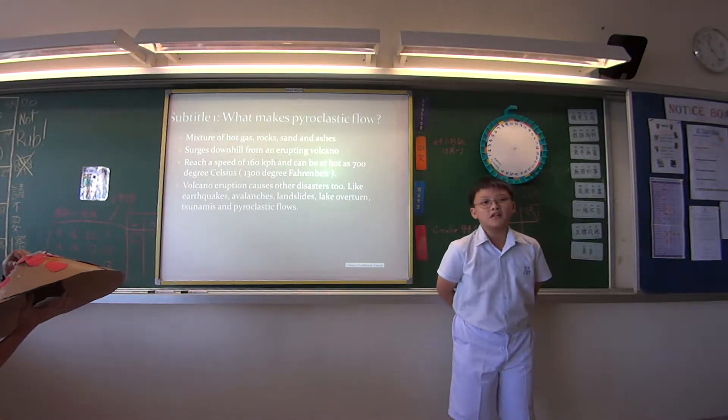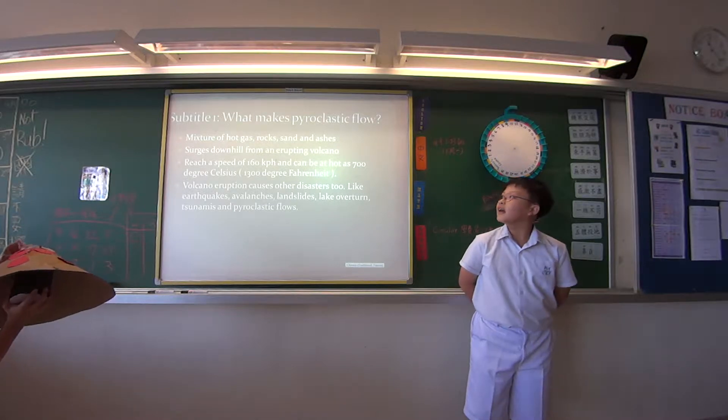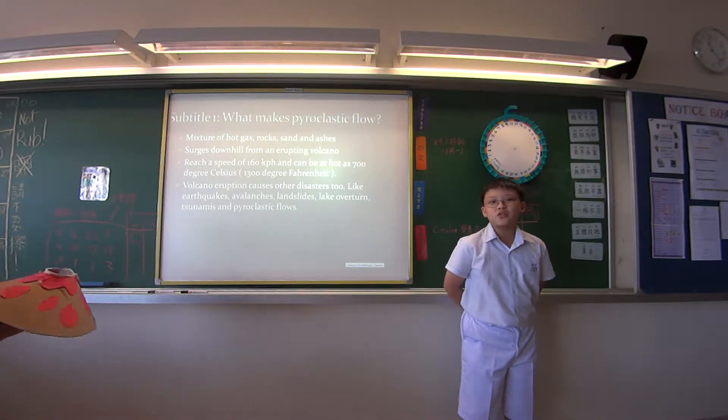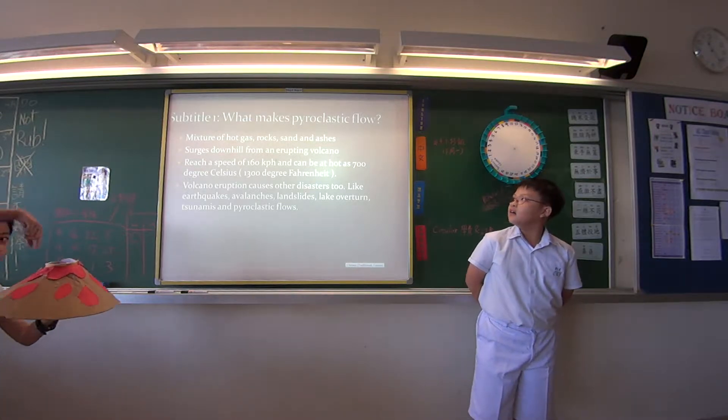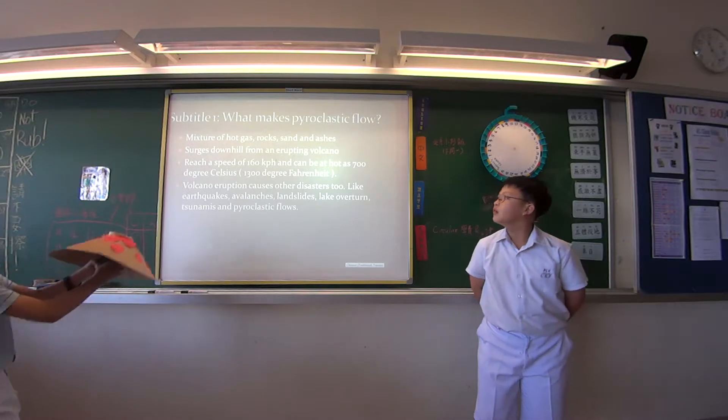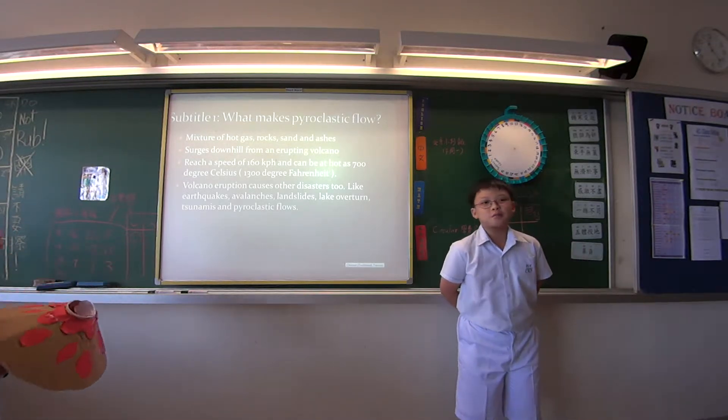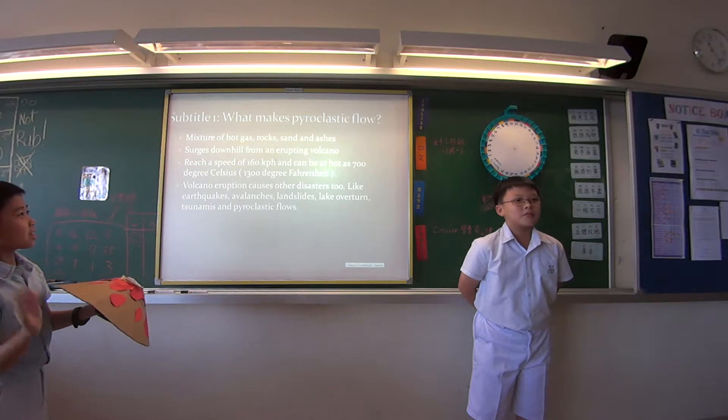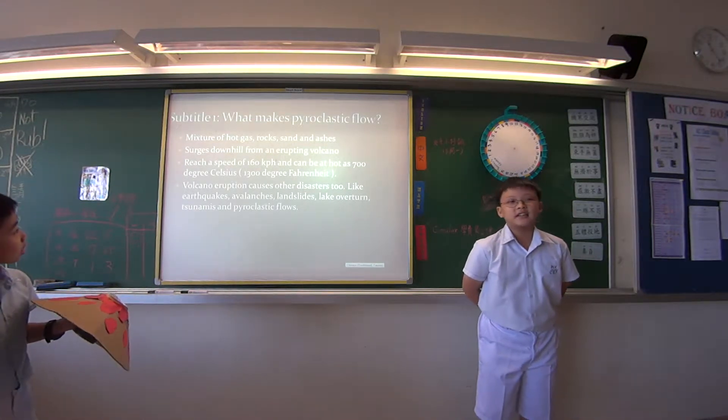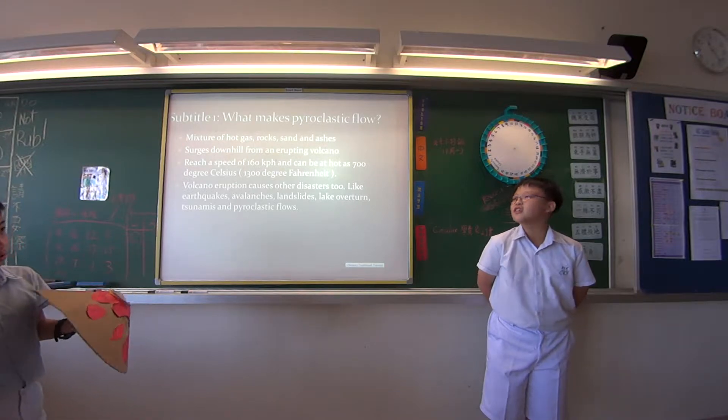It is a mixture of hot gas, sand, and ashes that surges downhill from an erupting volcano. It can reach a speed of 160 kilometers per hour. That means it is as fast as a speeding jet.